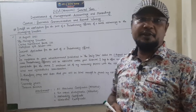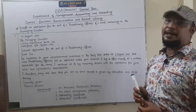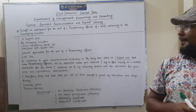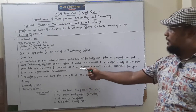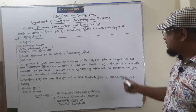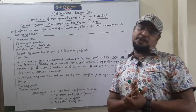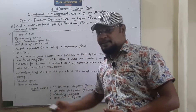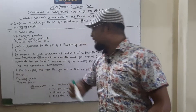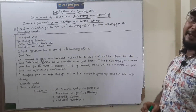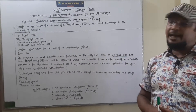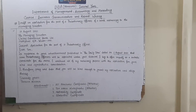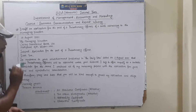That some probationary officers will be appointed under your disposal, I beg to offer myself as a suitable candidate for the same. I enclosed all of my necessary papers with the application for your kind and sympathetic consideration. I therefore pray and hope that you will be kind enough to grant my application and oblige thereby. You should obviously write 'Sincerely yours.' This is the enclosure.